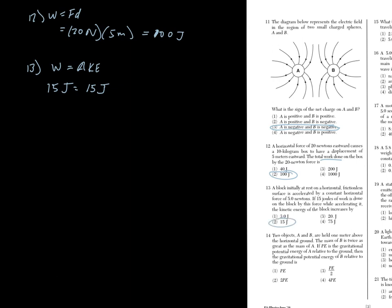Two objects, A and B are held one meter above the horizontal ground. The mass of B is twice as great as the mass of A. So for this question, potential energy is equal to mgh. So this is dependent on mass. For A, it's just that. For B, you have double the mass. So it's double the potential energy.